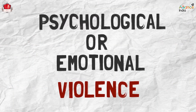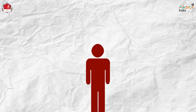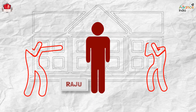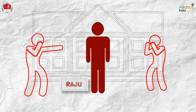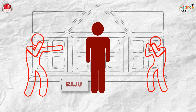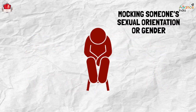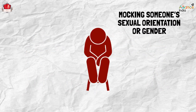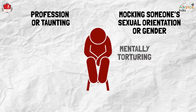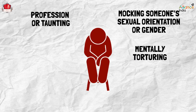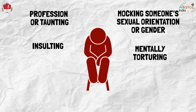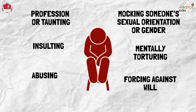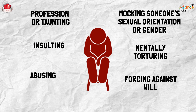Psychological or emotional violence is the third form of violence. This is Raju — he is bullied at school for being effeminate. Remember: mocking someone's sexual orientation, gender, or profession; taunting; mentally torturing; insulting; or forcing someone to do anything against their will and abusing them — these are all examples of psychological violence.